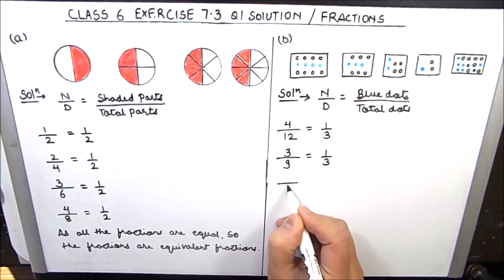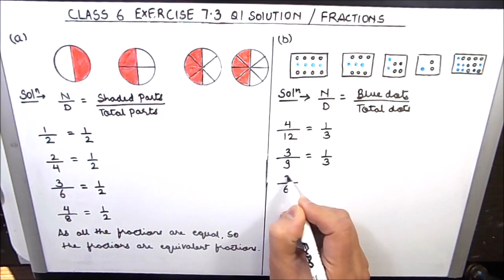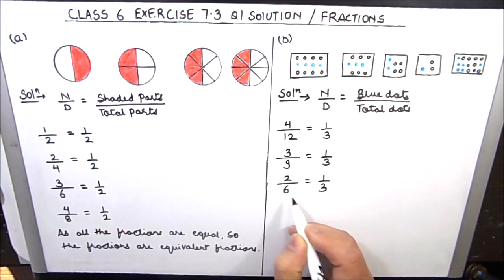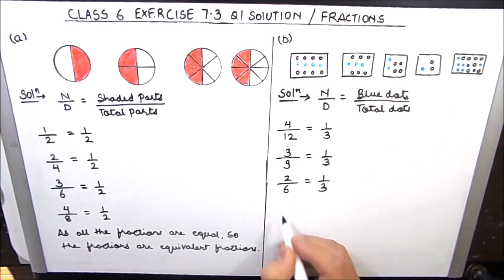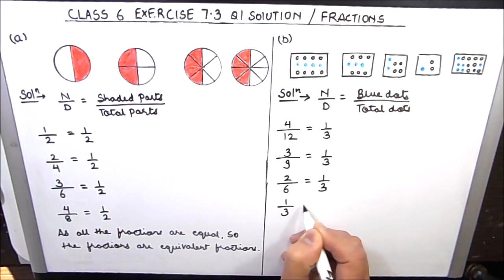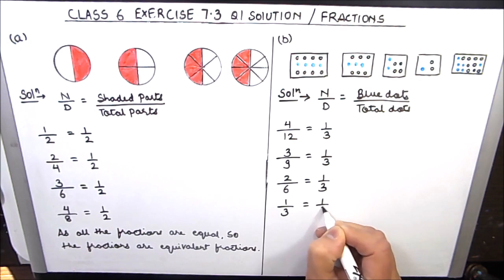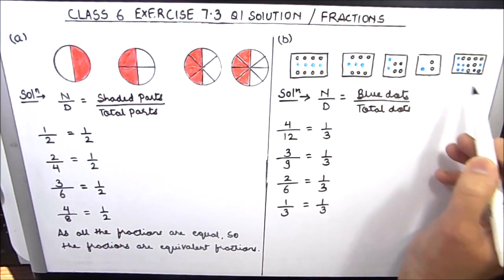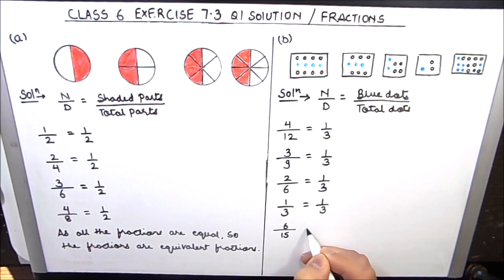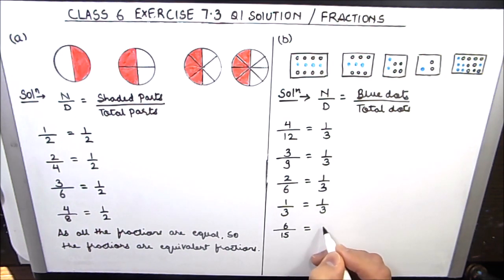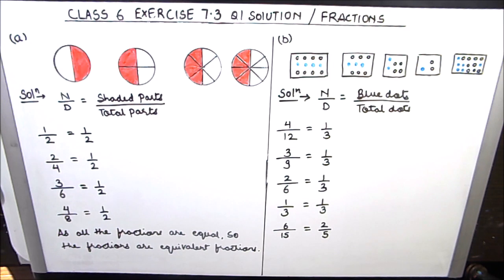In the next picture we have 6 dots in total, out of which 2 are blue dots. The fraction is 2 by 6, which is reduced to 1 by 3. The 4th picture has 3 dots out of which 1 is blue, so the fraction is 1 by 3. The last picture has 15 dots total, out of which 6 are blue. So 6 by 15 is reduced (3 times 2 and 3 times 5) to 2 by 5.